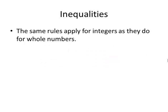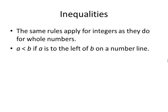Going back to inequalities for integers, the same rules apply as they did for whole numbers. We say that a is less than b if a is to the left of b on a number line. So for instance, negative 9 is less than negative 7 because if we put these two numbers on the number line, we'd have to count 9 units to the left to get to negative 9, but we'd only have to count 7 units to the left to get to negative 7. Because negative 9 is to the left of negative 7, it's less than that.